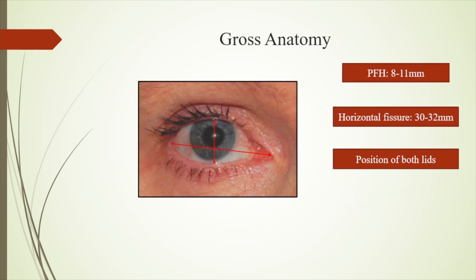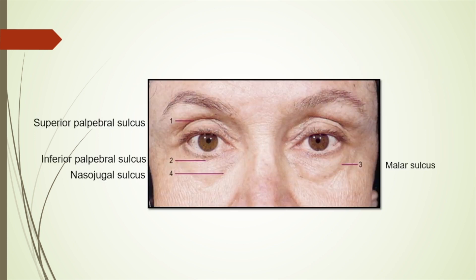Grossly, the position of the lids is that the upper lid is present just 1 to 2 millimeters below the superior limbus, and the lower lid just touches the inferior limbus. The palpebral fissure height is around 8 to 11 mm, and the horizontal fissure width is 30 to 32 mm.